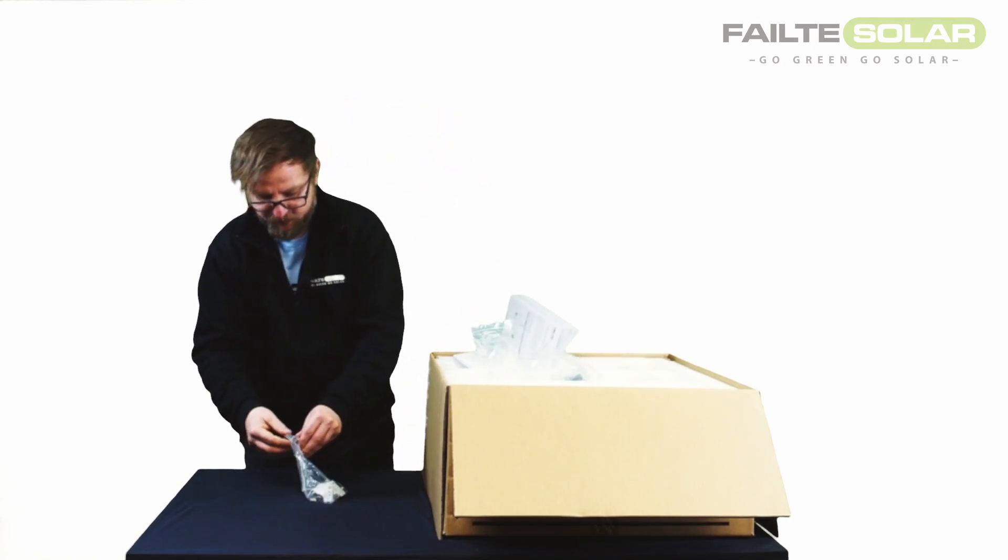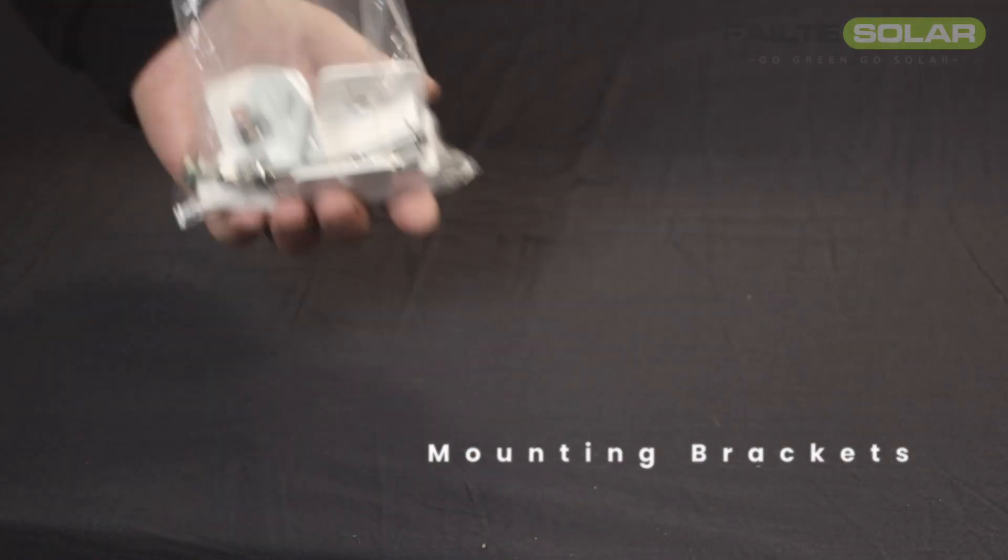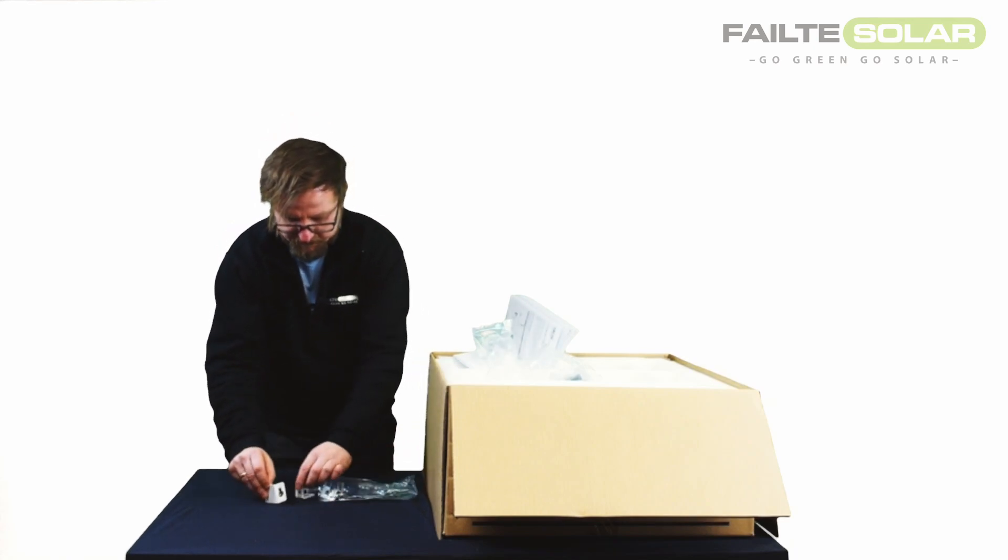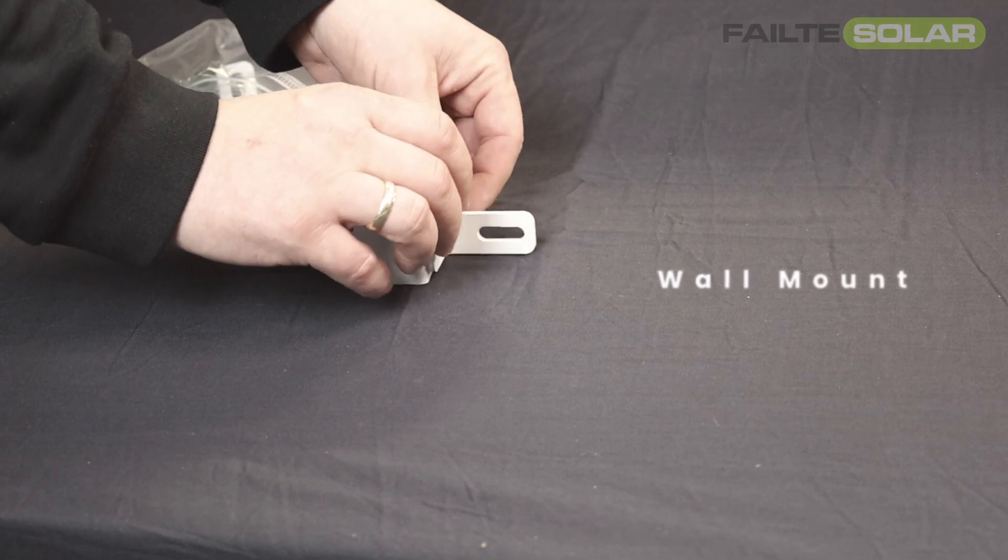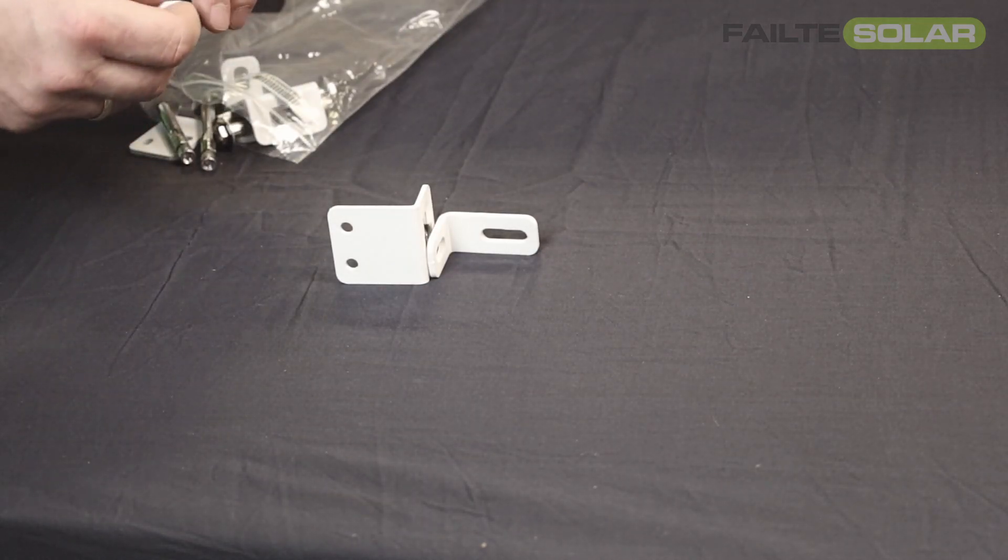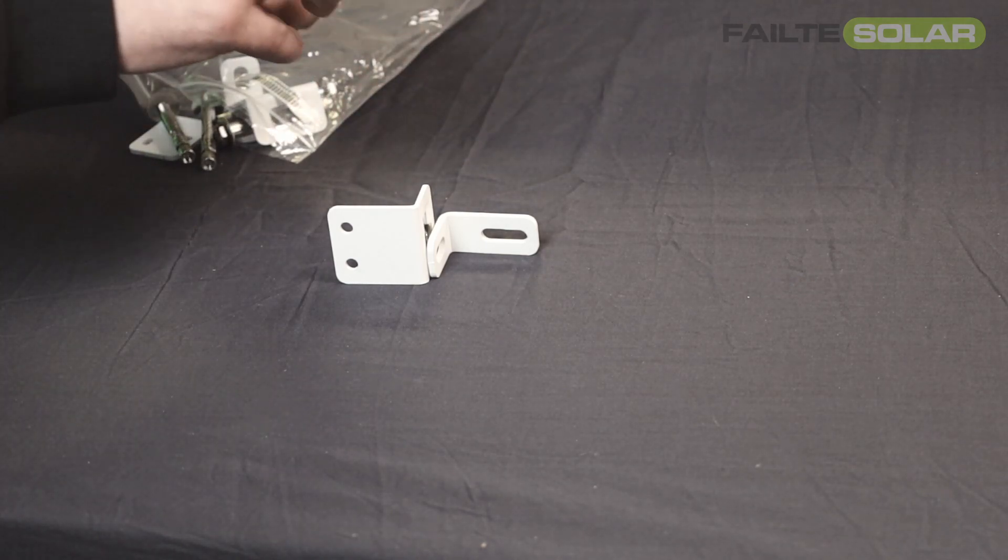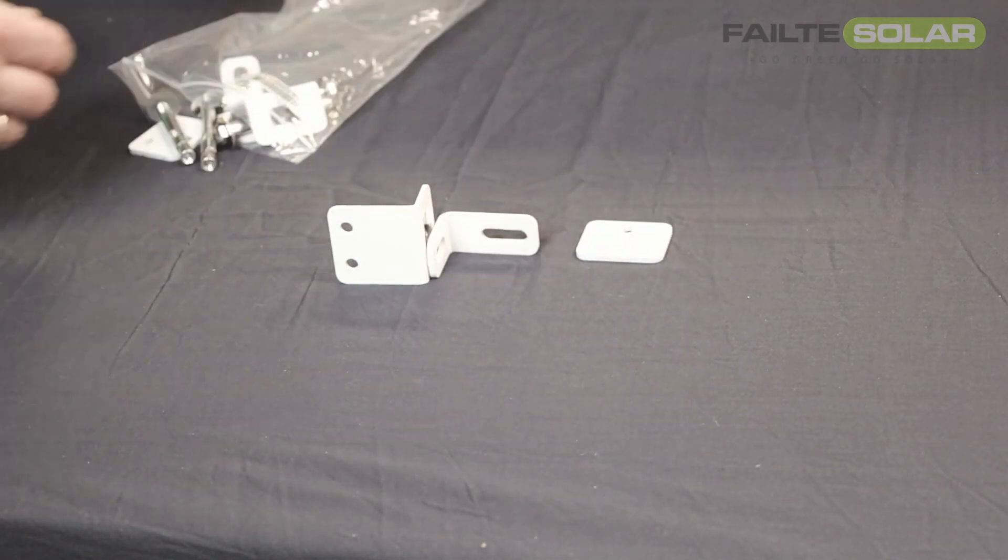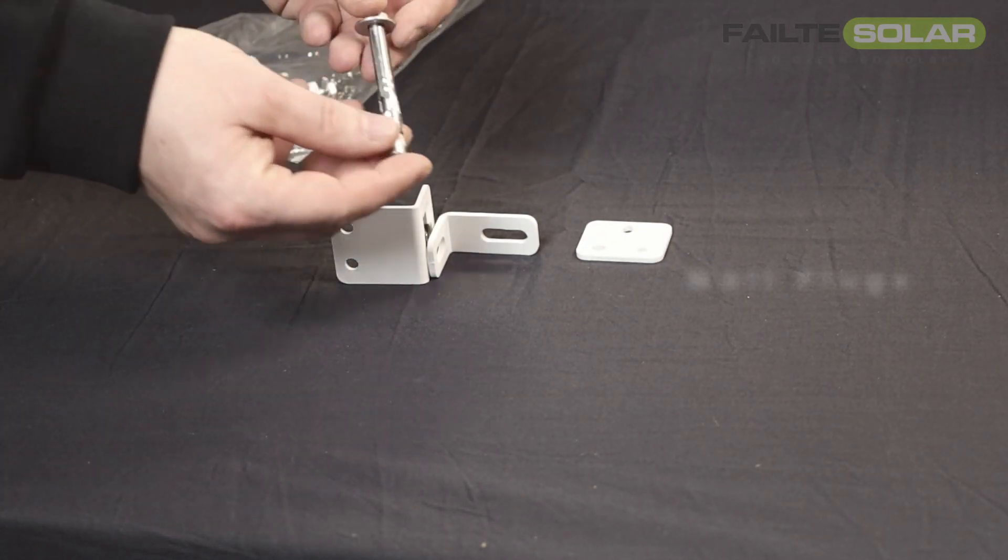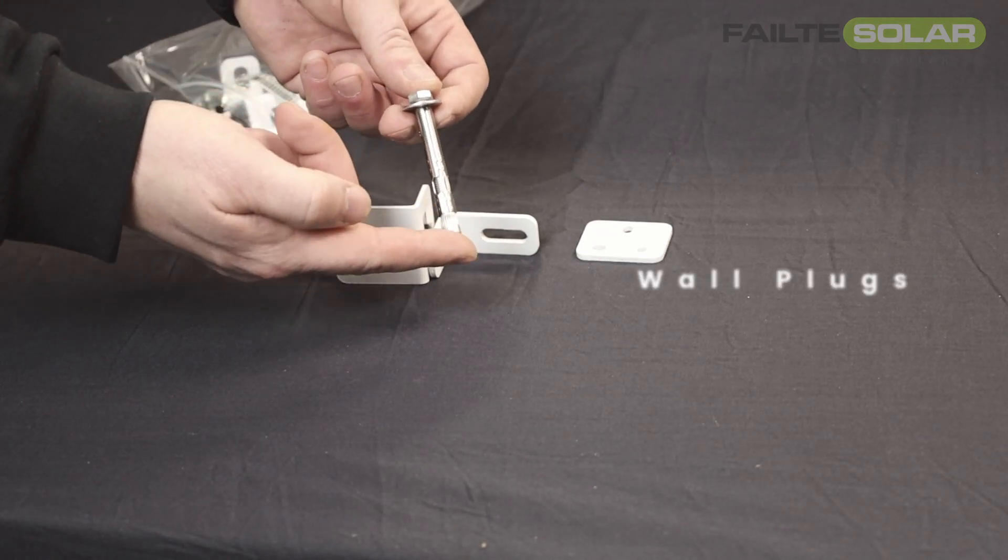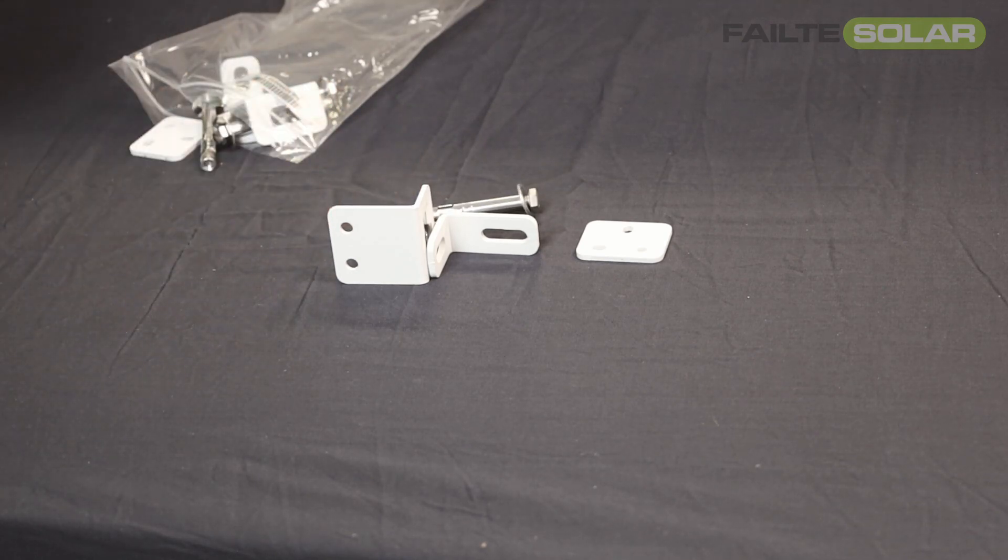And another bits and pieces, which is the mounting brackets. So two parts for the wall mount. Interlock between the inverter and the batteries. It's very flush, very quick installation. We also have the wall plugs, metal wall plugs supplied. So you see everything, 100% of what you need for the installation is provided.